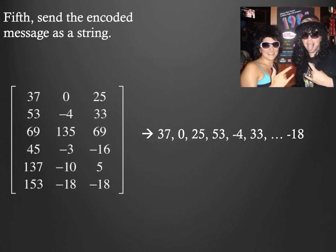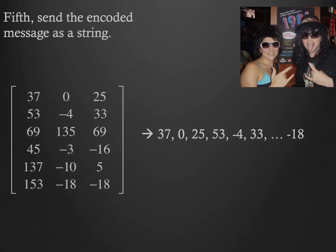Now, the last thing that we're going to do is we're going to take our encoded message, and we're going to write this as a string. So, we'll start with 37, and 0, and then 25, and go all the way down until we get to our last number, which in this case is negative 18. This is what we would give to somebody, and that somebody is either going to take it to somebody who it's intended for, or maybe they were the intended person. That person will then work on decoding the string of numbers that they just got.